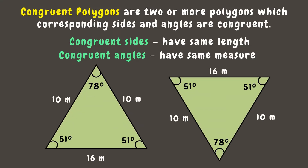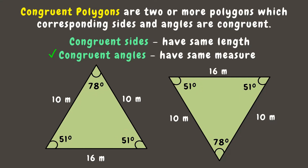Let's observe these two triangles. We can see that they have the same measurement of angles — two angles are 51 degrees and one angle is 78 degrees — therefore they have congruent angles. Also, their corresponding sides have the same length, where two sides are both 10 meters and the other side is 16 meters, so they have congruent sides.